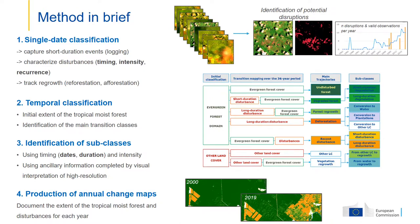In a second step, those single-date classifications are analyzed through time. The temporal sequence of those classifications allows first identifying the extent of the TMF domain, and then identifying transition classes, which are forest dynamics trajectories. Those trajectories are further refined in a third step, and this whole transition map is broken down into annual change maps, which document the extent of the TMF every year and the appearing of new disturbances.